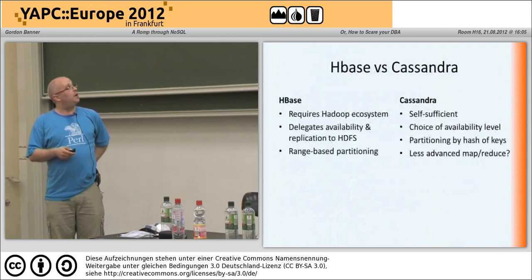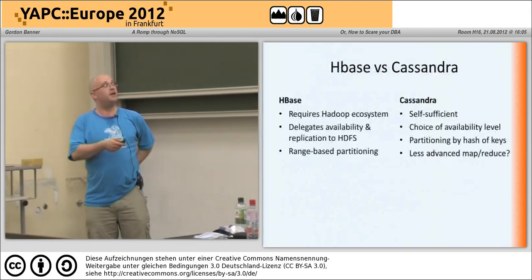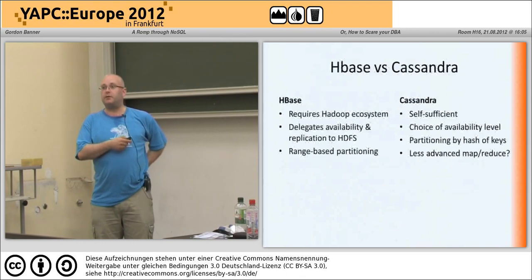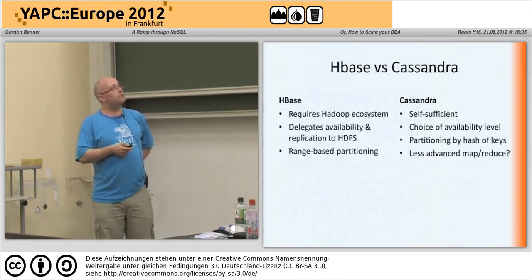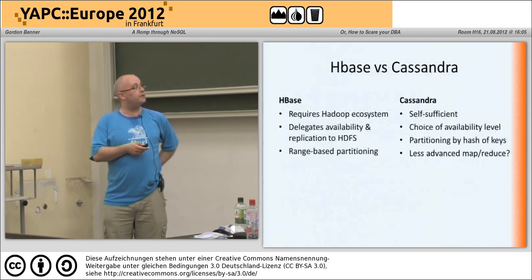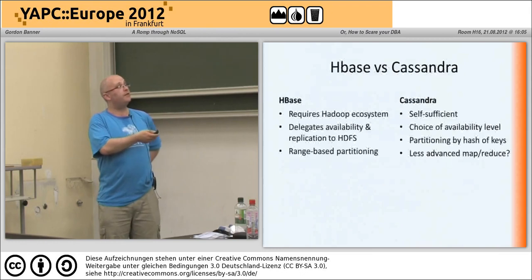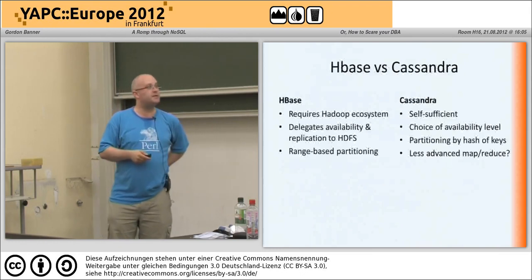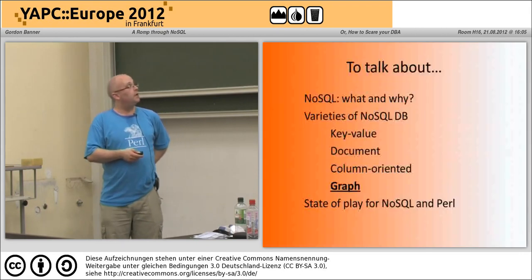HBase was started by Apache as part of the Hadoop ecosystem — it's the Hadoop database, and it delegates a lot to HDFS. Cassandra is slightly more influenced by Amazon Dynamo rather than Google BigTable, and the other big difference is it doesn't need all that Apache infrastructure, so there's less overhead and sysadmin work to get it started.